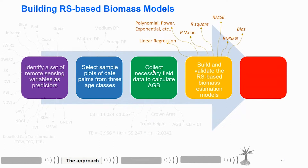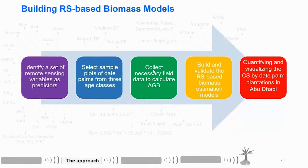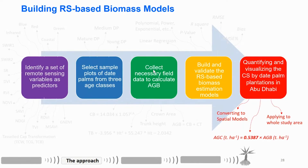We use linear regression, non-linear regression, and stepwise regression, along with around five statistical metrics to validate and select our model. After we are satisfied with our model, we convert it to a spatial model. The result will be above-ground biomass, which we multiply by the factor 0.5387 to calculate carbon stock in tons per hectare, and we apply it to the whole study area.